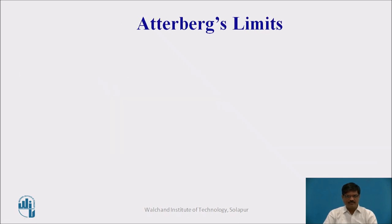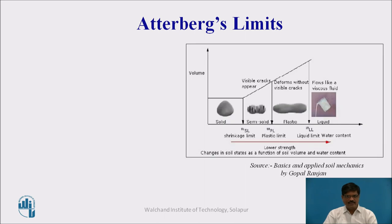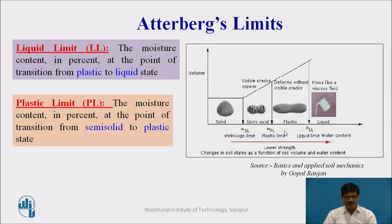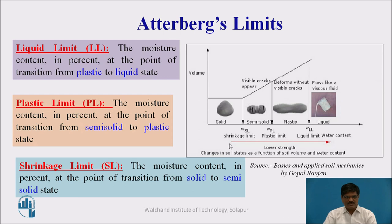Let us take a review of the Atterberg limits, which has been already discussed in the earlier presentation. With the help of this particular figure, we can define the various limits proposed by Atterberg. The first one is the liquid limit, which is a boundary moisture content between liquid state and plastic state. Then the plastic limit, which is a boundary moisture content between the plastic state and semi-solid state. And the last one is the shrinkage limit, which is the boundary moisture content between semi-solid state and solid state.